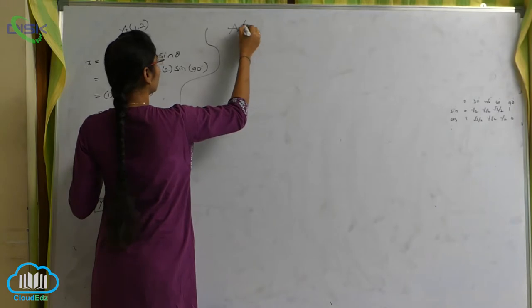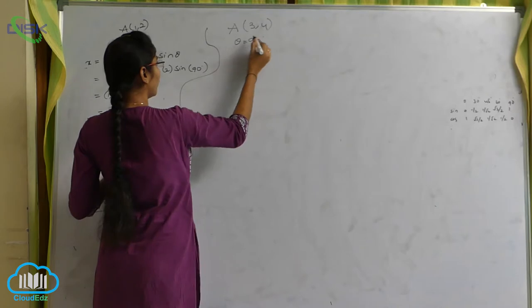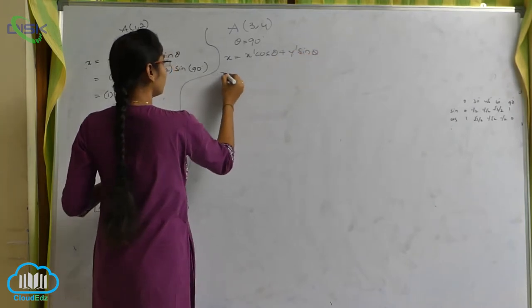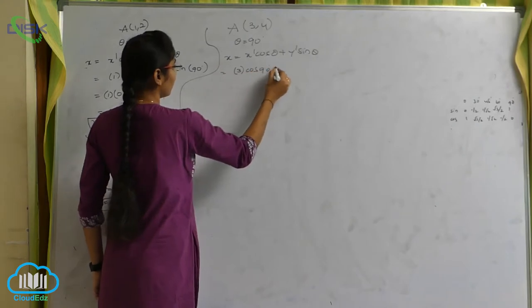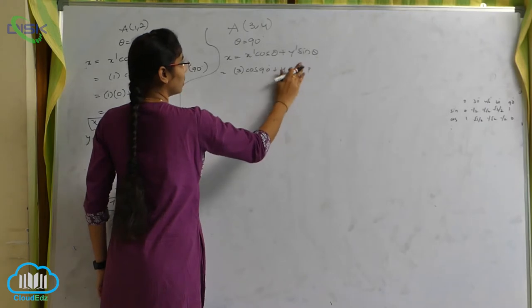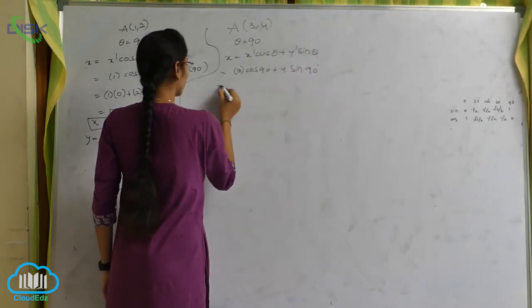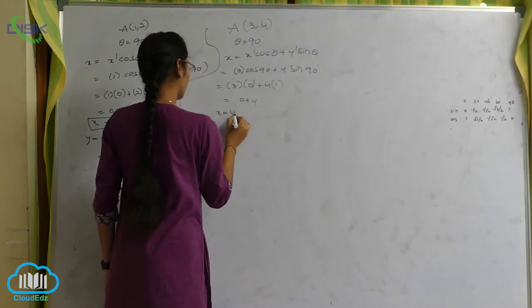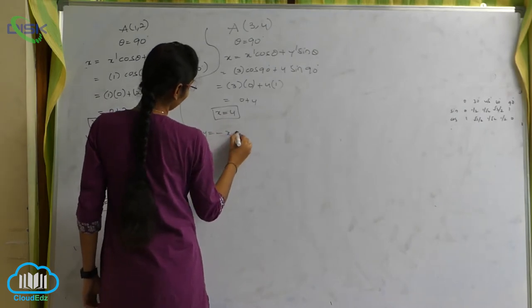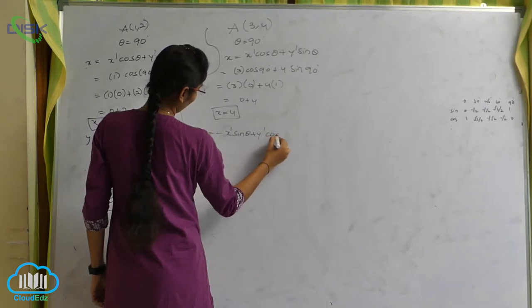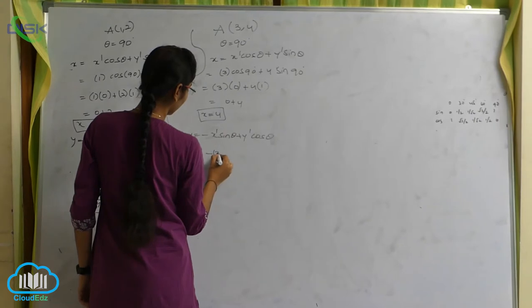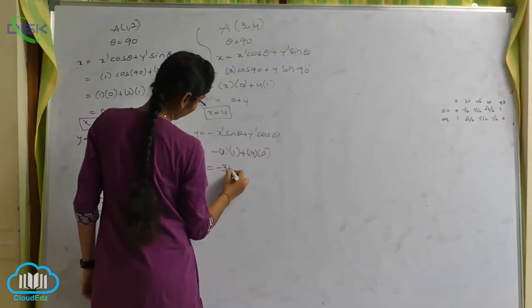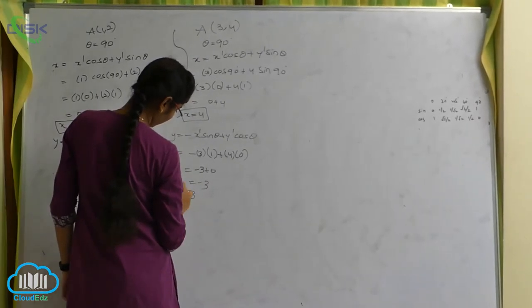For point a = (3, 4), theta equals 90 degrees. x equals x-dash cos theta plus y-dash sin theta: 3 into cos 90 (0) plus 4 into sin 90 (1) equals 0 plus 4, so x equals 4. For y: minus x-dash sin theta plus y-dash cos theta gives minus 3 into sin 90 (1) plus 4 into cos 90 (0), which is minus 3 plus 0, so y equals minus 3.